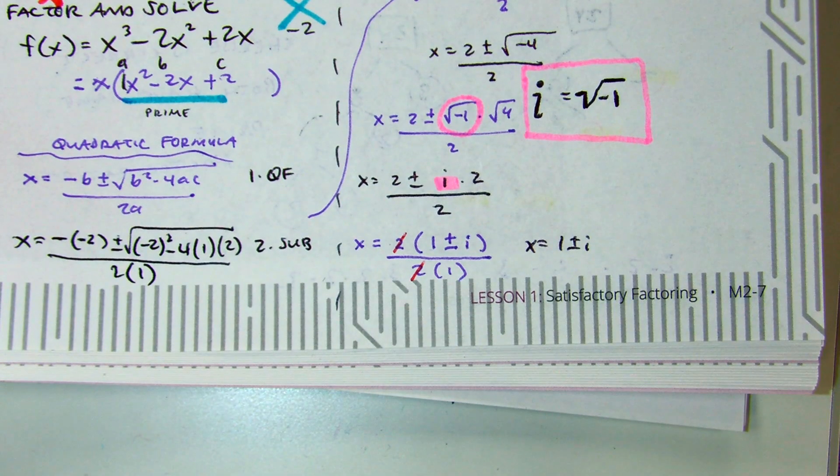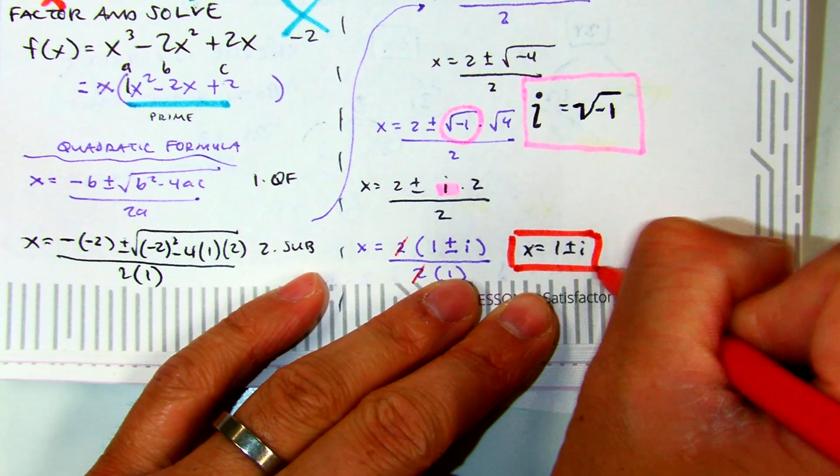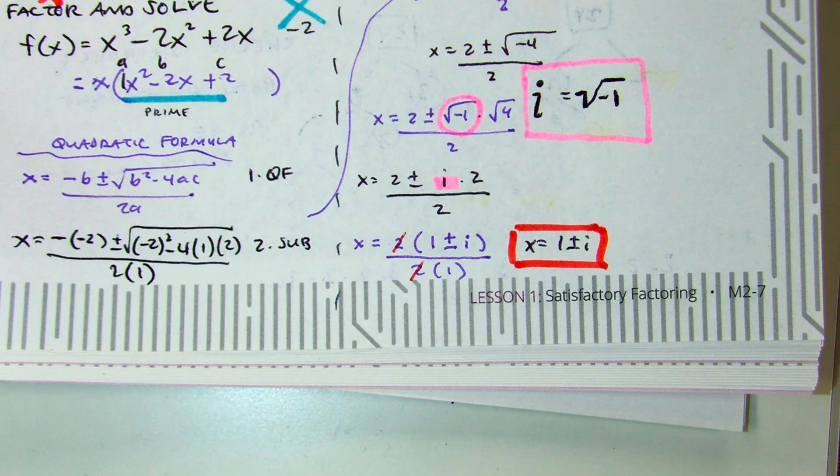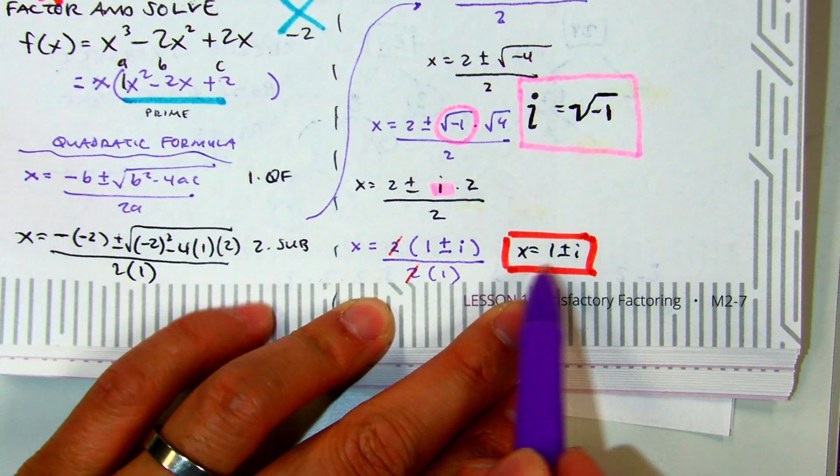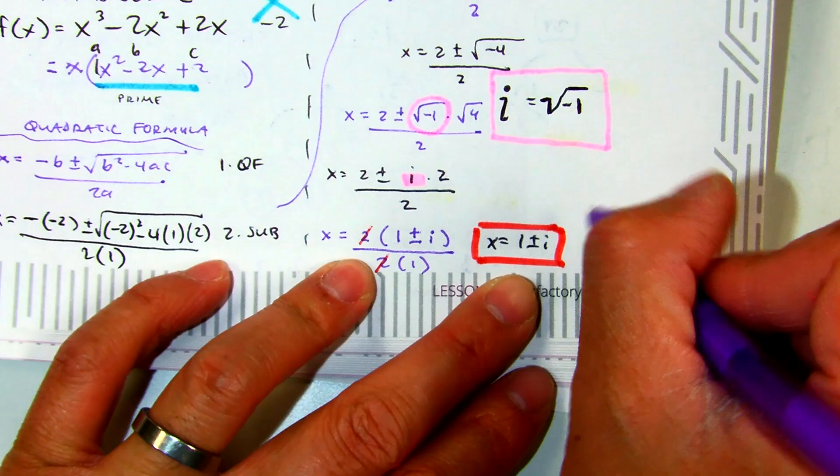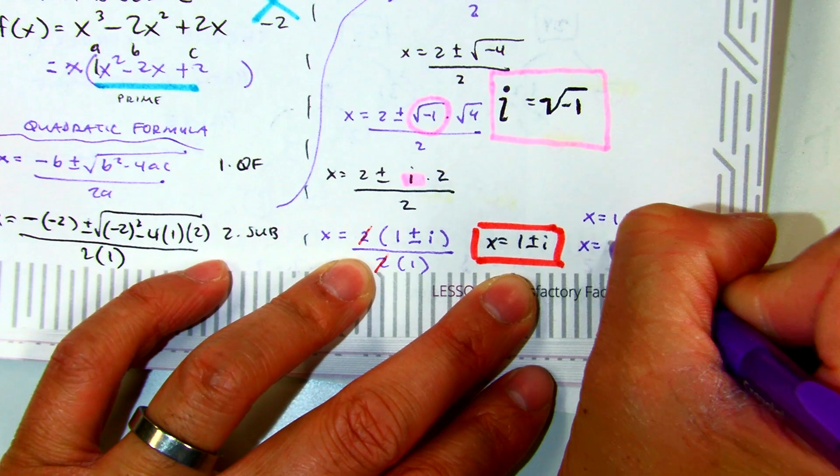Now that was a lot of work for the quadratic formula, but what it did is it actually found us the two solutions. Pay attention, because quadratics is power 2, so there are two solutions: 1 plus i and 1 minus i.